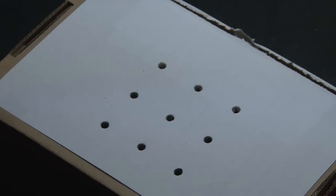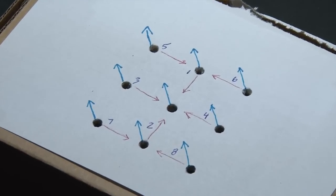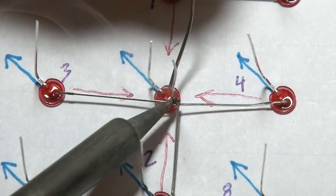Then using a screwdriver a bit smaller than the LEDs, I poked out the 9 holes. Then I drew a little diagram for the LED leads, inserted the LEDs, then bent all the positive legs down and began soldering them together.